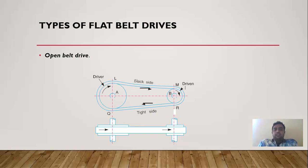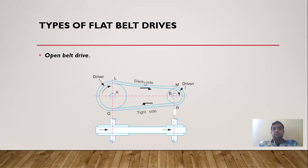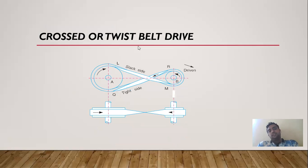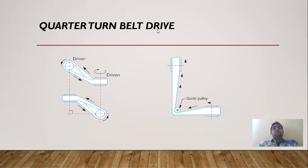In a cross or twist belt drive, the belt passes through a cross point between the driver and driven pulley. There is a slack side and a tight side, and the belt is twisted — hence it is also called a twist belt drive. In a quarter-turn belt drive, the driver and driven pulleys are not on the same axis; a guided pulley is attached between them.